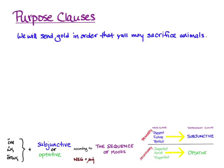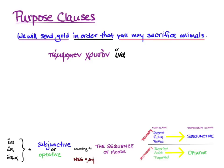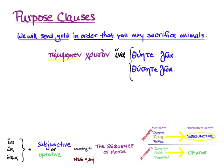Let's try another: 'We will send gold in order that y'all may sacrifice animals.' The main clause, 'we will send gold,' is pempomen chryson. We need the conjunction — hina again. For the purpose clause, we look at the main verb, which is future tense. According to our chart, that means we're in primary sequence and use the subjunctive again. So it's thuēte zōa. With the aorist subjunctive it would also be thuēte zōa. These are practically interchangeable unless context really stresses simple or progressive aspect.